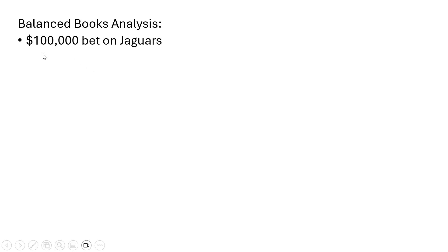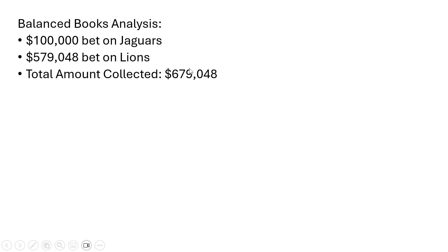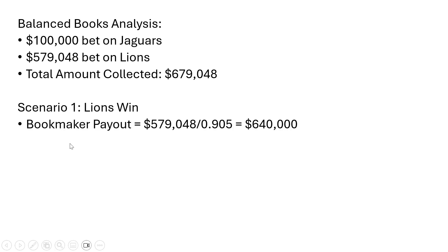Achieving balance would generate a risk-free return for the bookmaker. Let's illustrate that with a balanced books analysis. The bookmaker collects $100,000 of bets in total on the Jaguars. For balanced books, the amount bet on the Lions has to be 5.79 times this — so $579,048 bet on the Lions would ensure balanced books. The total amount collected by the bookmaker is the sum of these two numbers. Let's take scenario one: the Lions win the game. In this case, the bookmaker's payout to all those who bet on the Lions winning would equal $640,000.